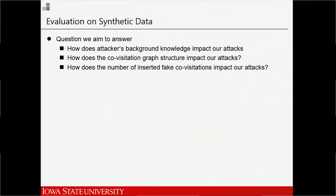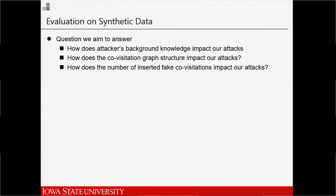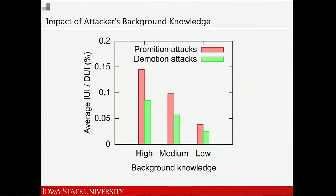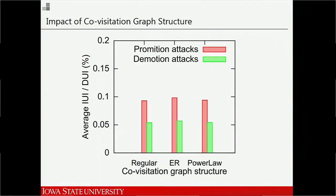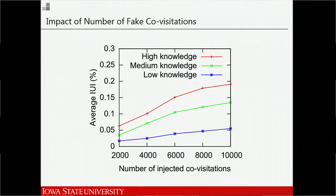We evaluated our attack first on a synthetic recommendation system to answer three questions: how does the attacker's background knowledge impact the attack, how does the covisitation graph structure impact it, and how does the number of fake covisitations impact the outcome? The results show: the more knowledge the attacker has, the better the result; the covisitation graph structure has no significant impact; and as the number of fake covisitations increases, the threat increases.